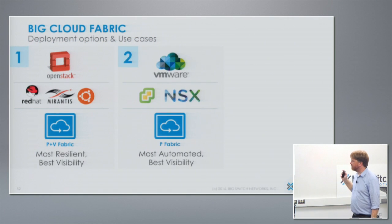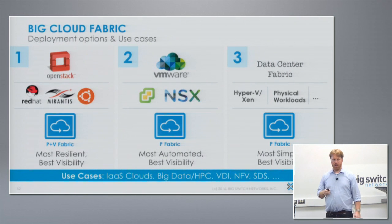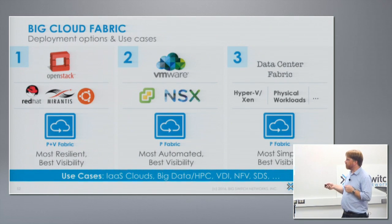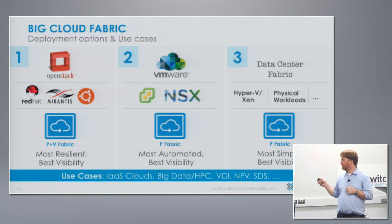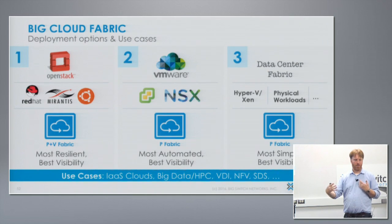There are three big use cases our customers have been pushing us towards. First is OpenStack — people trying to replicate the Amazon EC2 experience with open source software. We have integrations with Red Hat and Mirantis and are working with Ubuntu as well. For this case, people will often deploy with our optional v-switch for some extra functionality — the integrated physical and virtual.